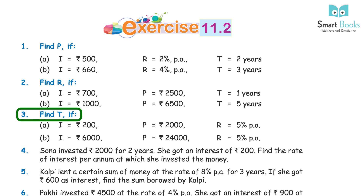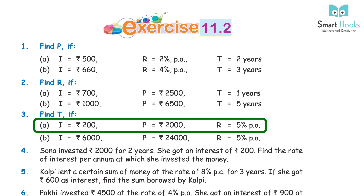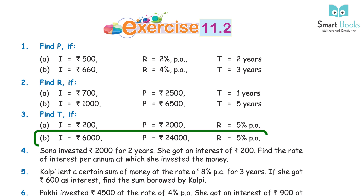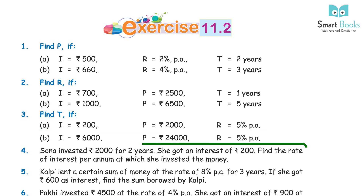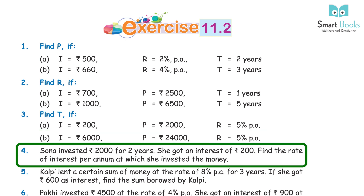Question 3: Find T. (A) I = Rs 200, P = Rs 2,000, R = 5% per annum. Answer: 2 years. (B) I = Rs 6,000, P = Rs 24,000, R = 5% PA. Answer: 5 years.